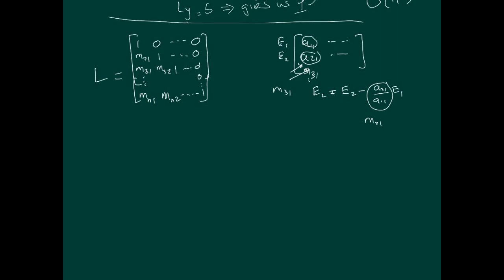Going through Gaussian elimination and putting these multiples in this form gives us our lower triangular matrix. When you're eliminating the target matrix A, what you are making it into is an upper triangular matrix. So the eliminated result is your upper triangular U, and the multiples form your lower triangular L, such that multiplying the two gives you A back.